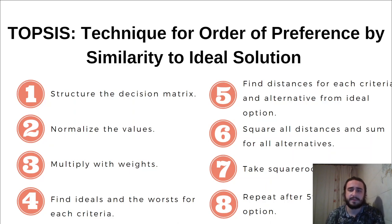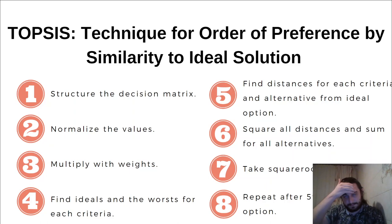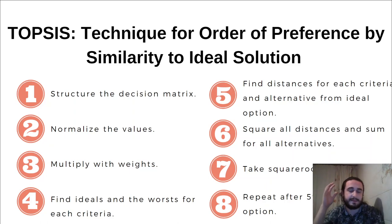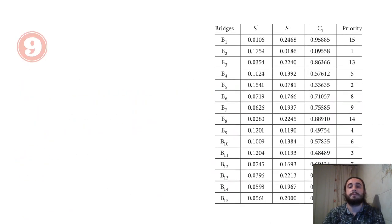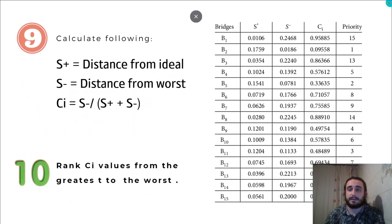After we define the best and worst options in terms of each criterion, we calculate the squared distance of all alternatives from both ideal and worst, then take the square root for both ideal and worst distances. We get a summary table from this.